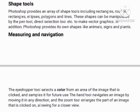The eyedropper tool selects a color from an area of the image when clicked and samples it for future use. The hand tool navigates an image by moving it in any direction, and the zoom tool enlarges the part of an image that is clicked on, allowing for a closer view.